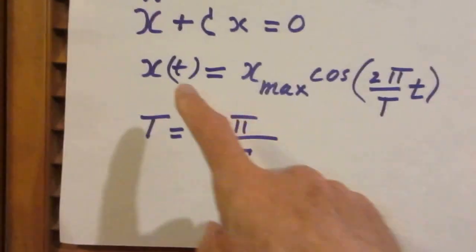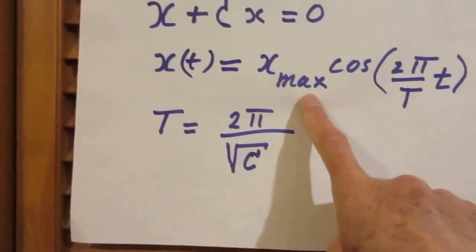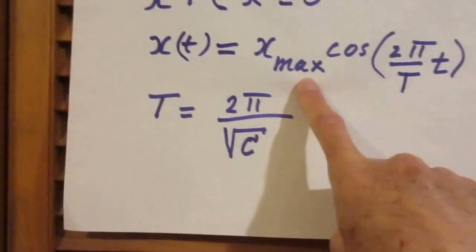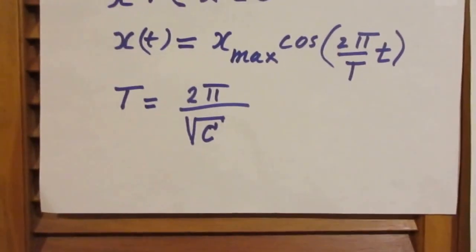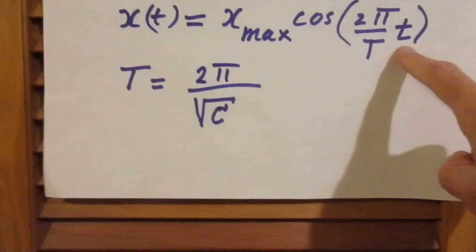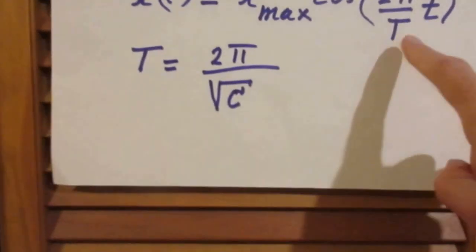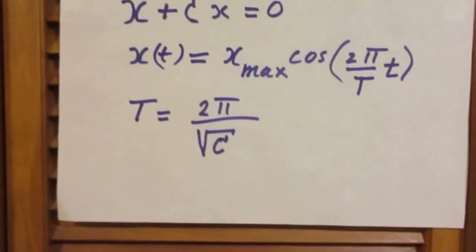So x of t is then the maximum value for x, we call that also the amplitude, times the cosine of 2pi divided by capital T times little t. Little t is the time. Capital T is the period of the oscillation.